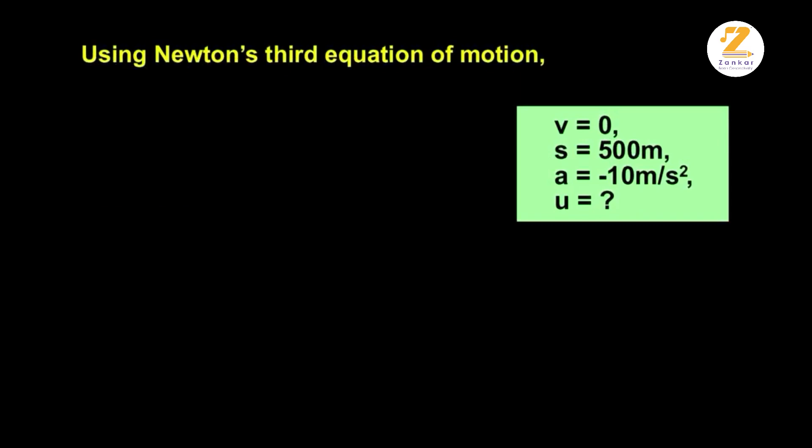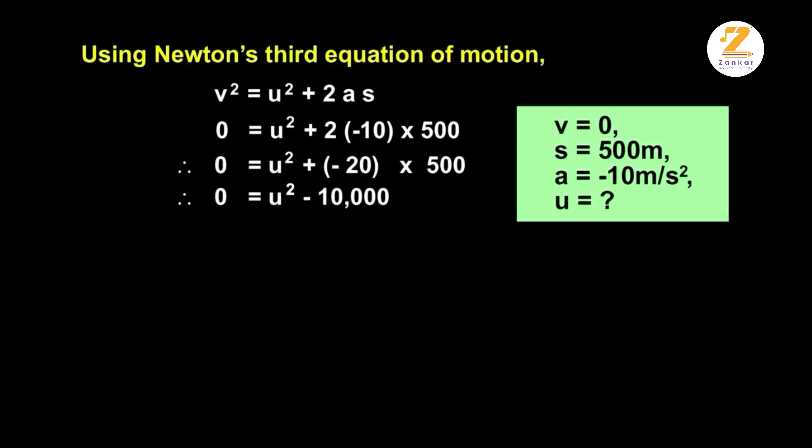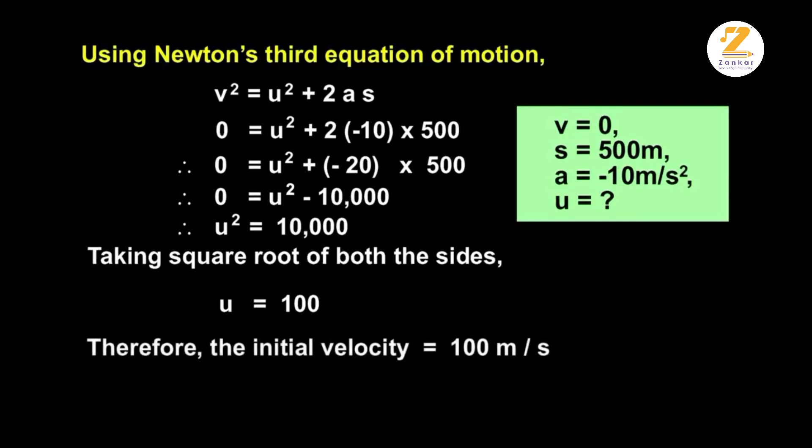Using Newton's third equation of motion, v squared is equal to u squared plus 2as. Zero is equal to u squared plus 2 into minus 10 into 500. Therefore, 0 is equal to u squared plus minus 20 into 500. Therefore, 0 is equal to u squared minus 10,000. Therefore, u squared is equal to 10,000. Taking square root of both the sides, u is equal to 100. Therefore, the initial velocity is equal to 100 meter per second.